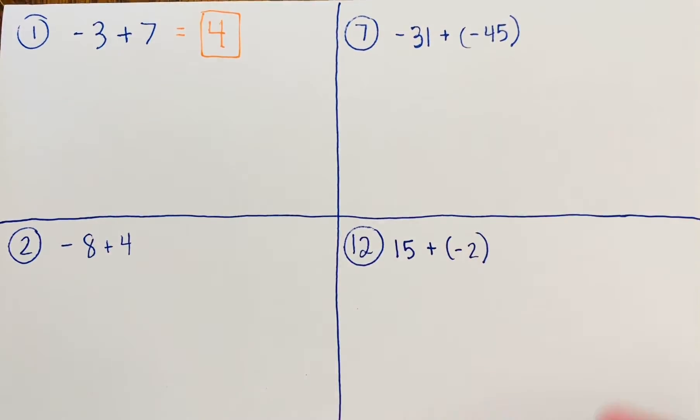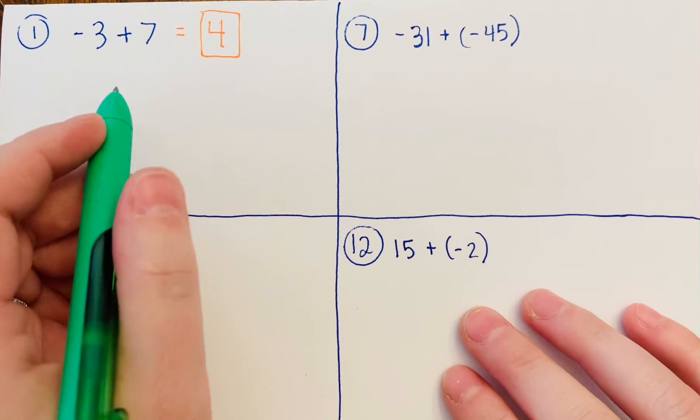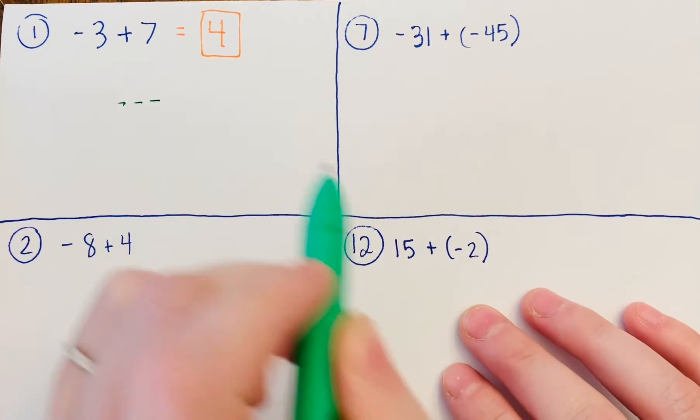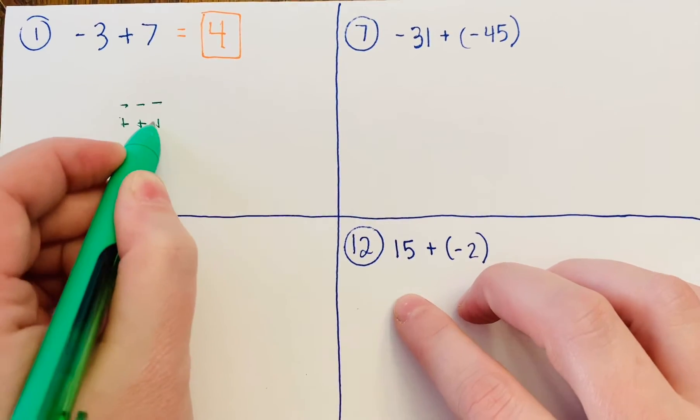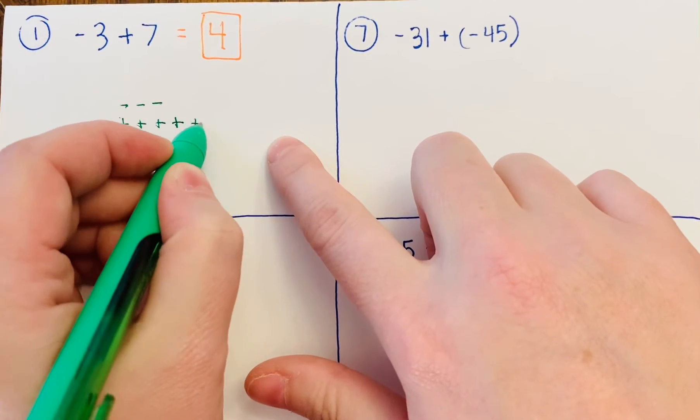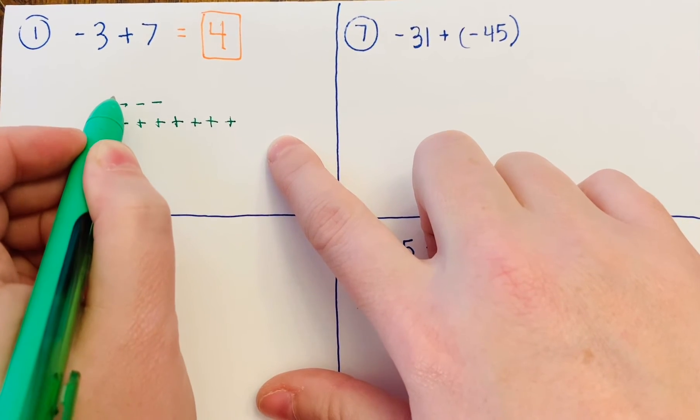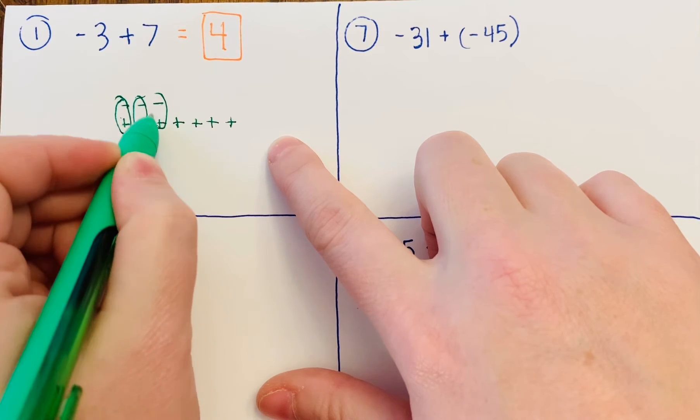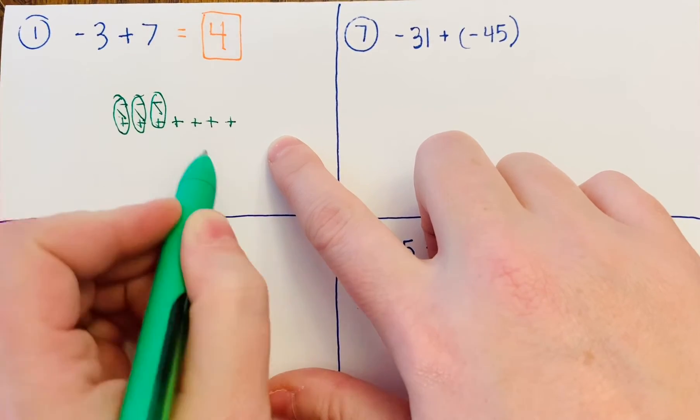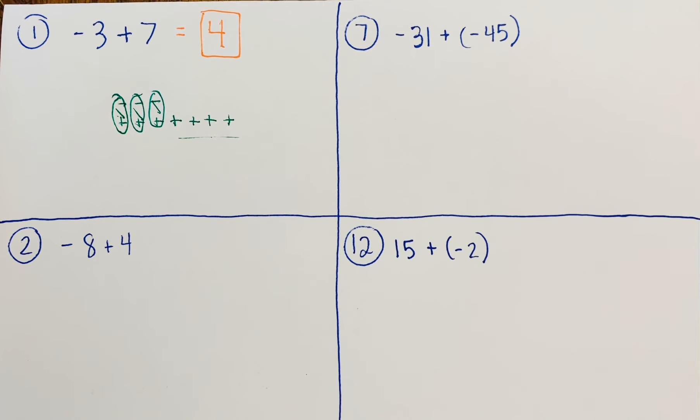Remember we learned to use counters. If you want to double-check your answer, you could draw out your three negatives and seven positives, get rid of your zero pairs, and see what you have left. You have four positives left, so that's your answer.